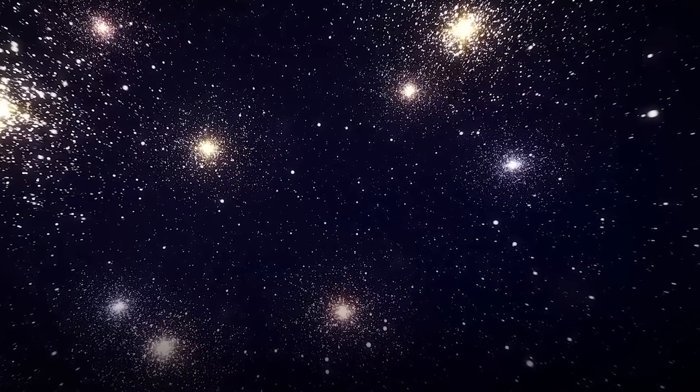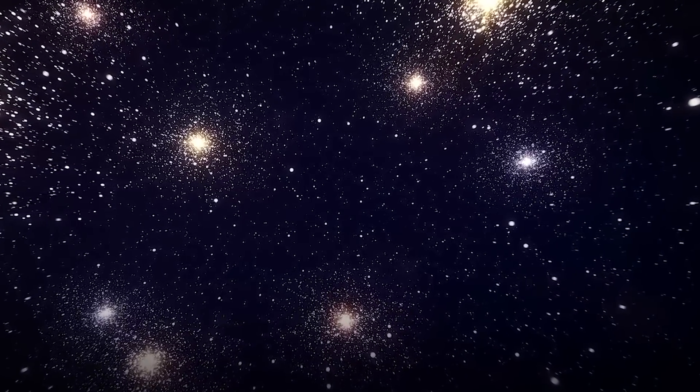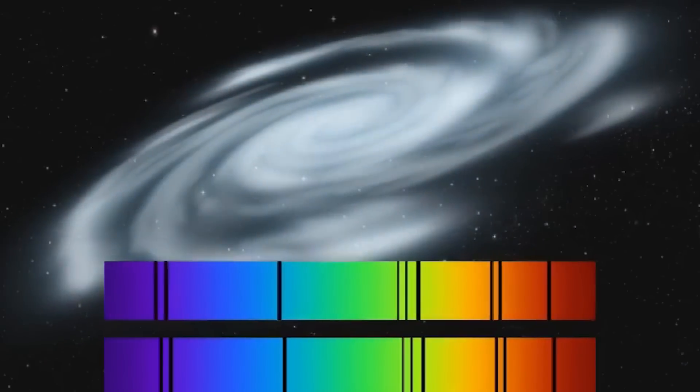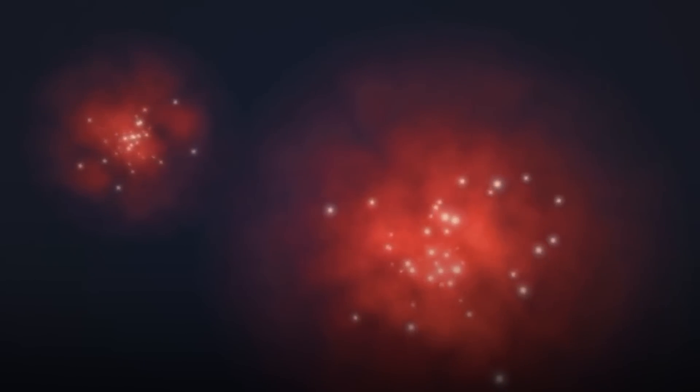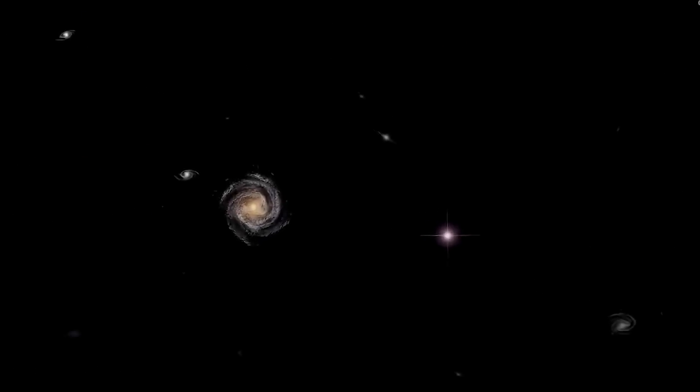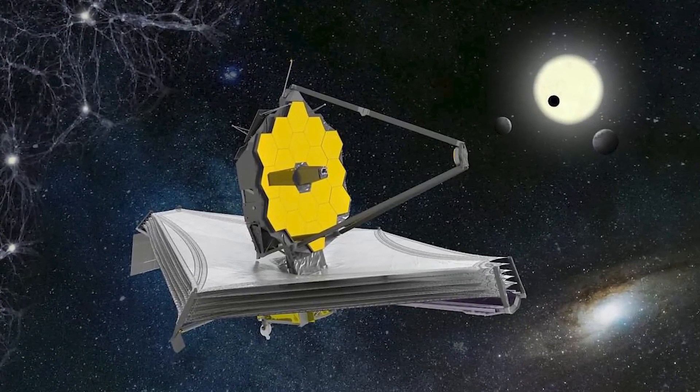This stretching of light is called redshift. The longer the light travels, the further toward the red end of the electromagnetic spectrum the expansion of the universe shifts its light. This means that redshift can be used as a measure of distance, and that early galaxies should have light displaying extreme redshifts, with their light stretched all the way into the infrared range, which is the JWST specialty.